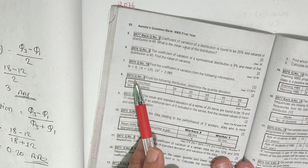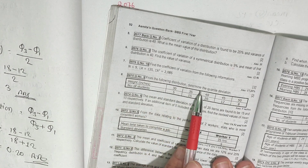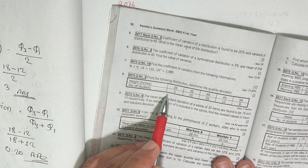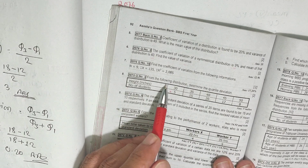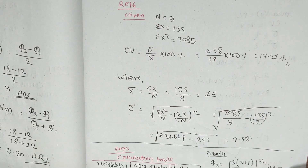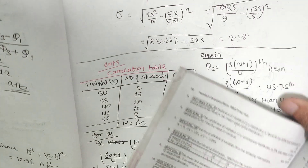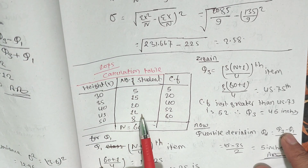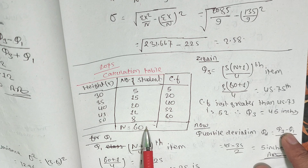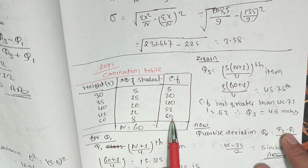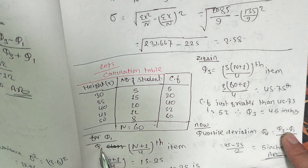From the following distribution, determine the quartile deviation. This is a discrete series data. The quartile deviation equals Q3 minus Q1 divided by two. We need the cumulative frequency (cf) to find Q1 and Q3.